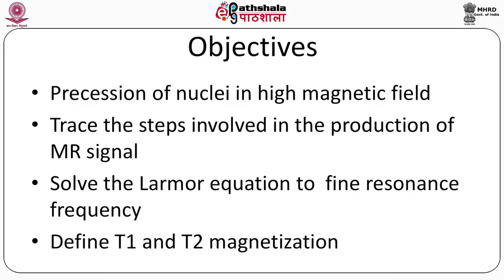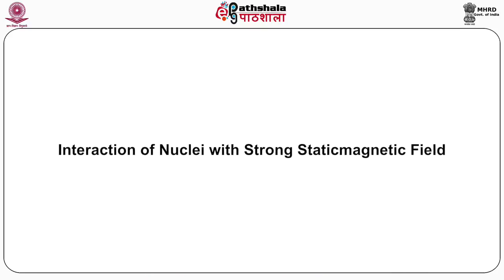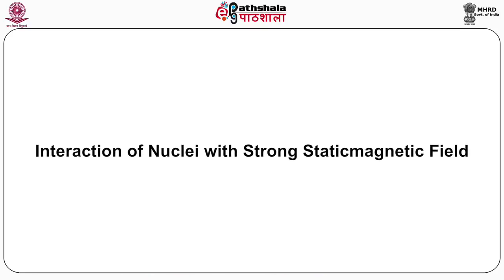The objective of this module is that after completing this chapter, a reader should be able to understand the position of nuclei in a high magnetic field, trace the steps involved in production of magnetic resonance signals, solve the Larmor equation to find a resonance frequency, and define T1 and T2 relaxation times.